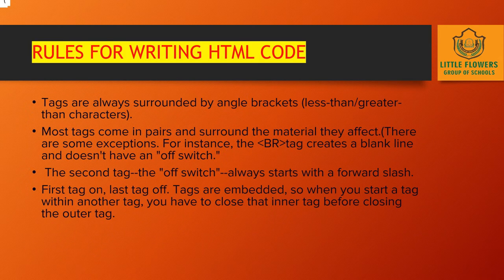Next are the rules for writing HTML. Tags are always surrounded by angle brackets — less than and greater than signs. Most tags come in pairs and surround the material they affect. There are some exceptions — for instance, the BR tag creates a blank line and does not have an off tag. Most tags come in pairs, and the second tag is the off tag.